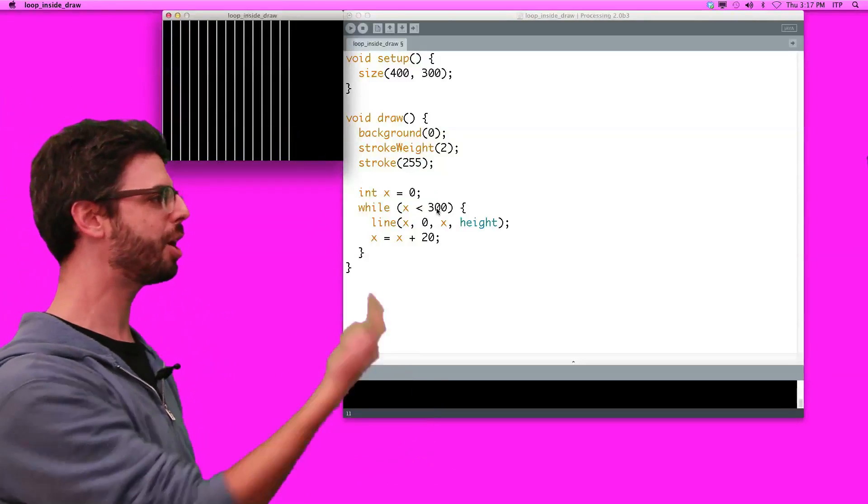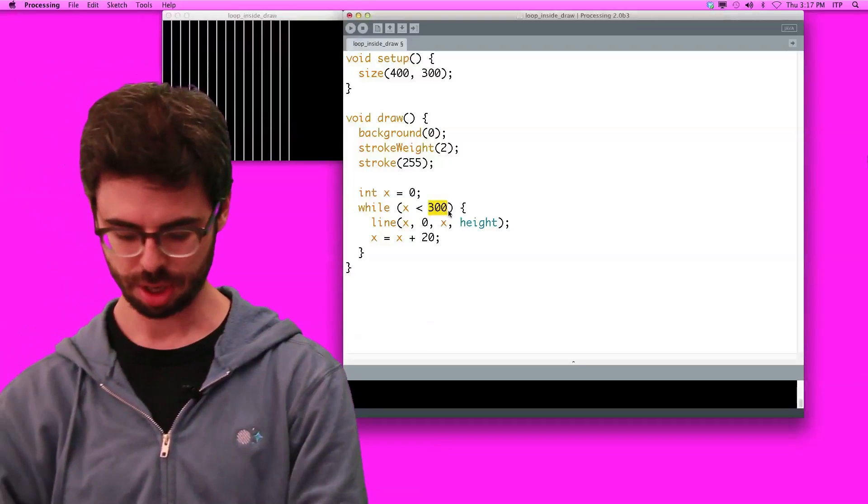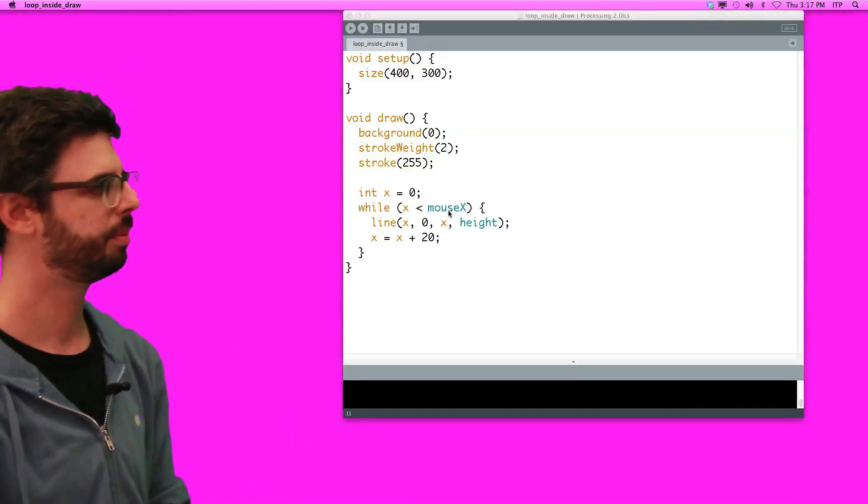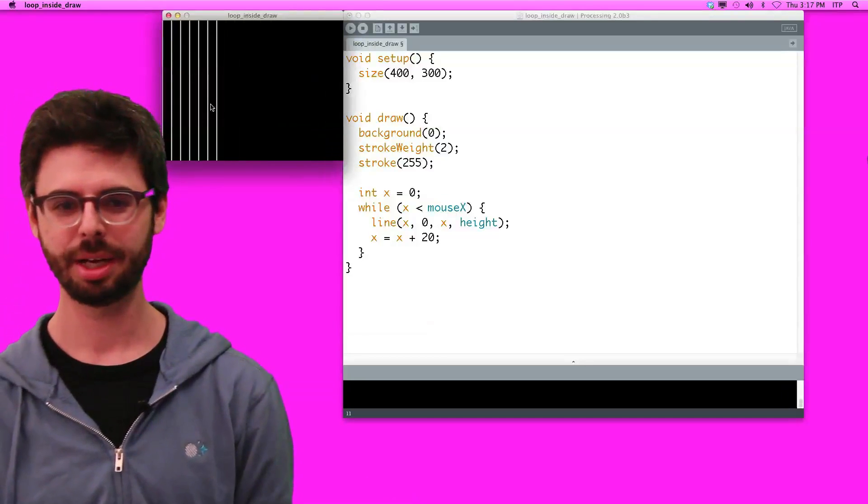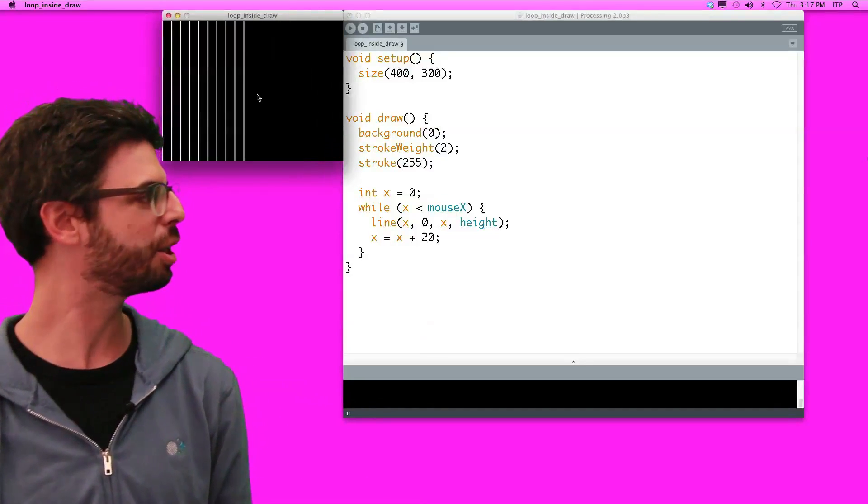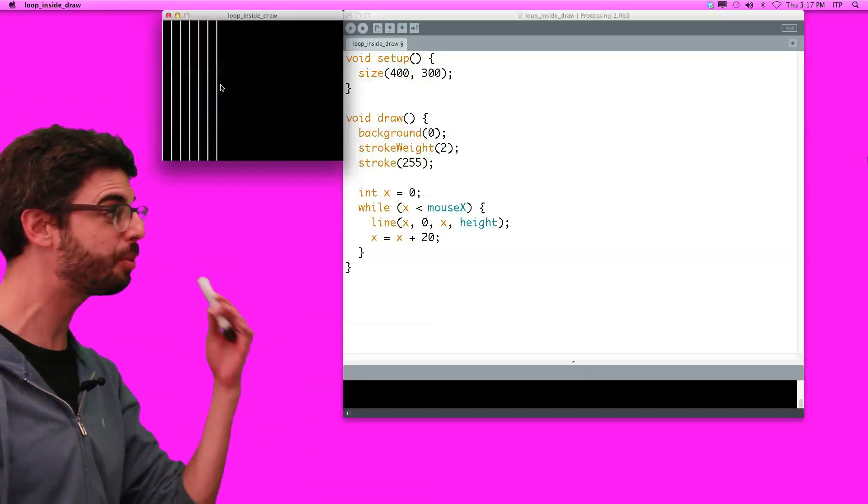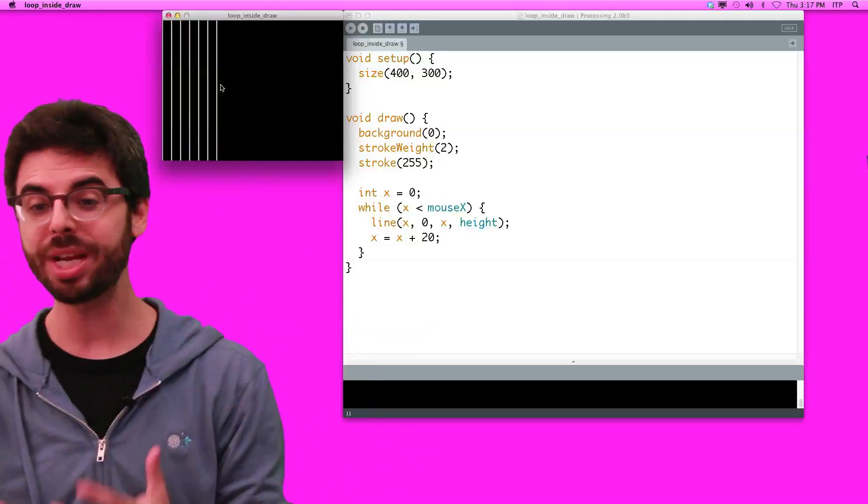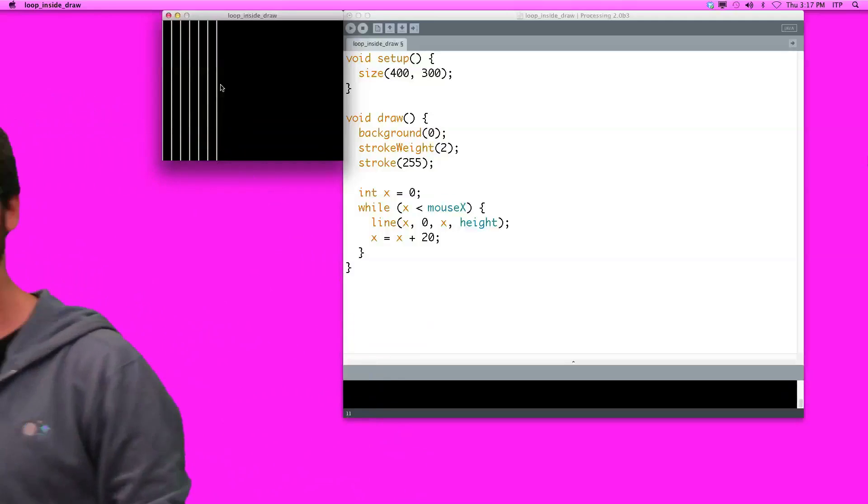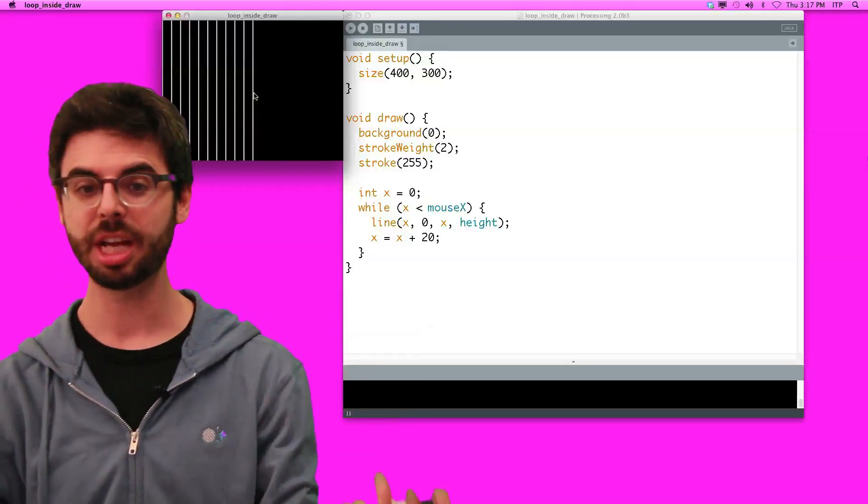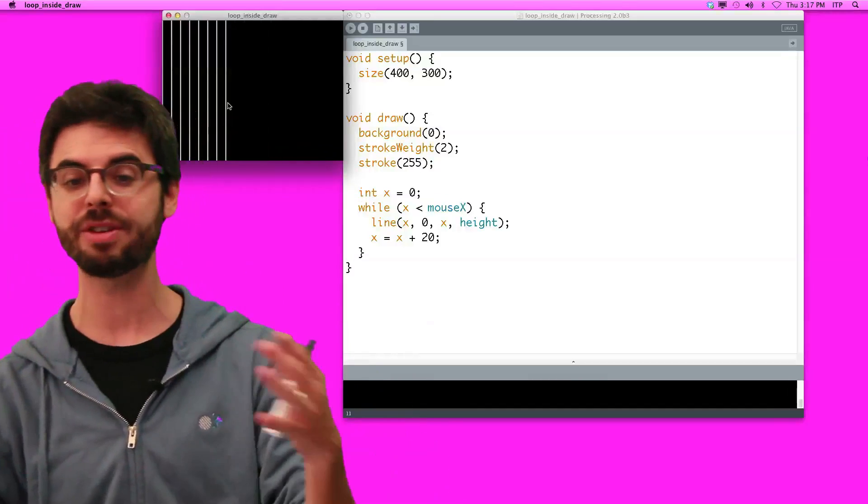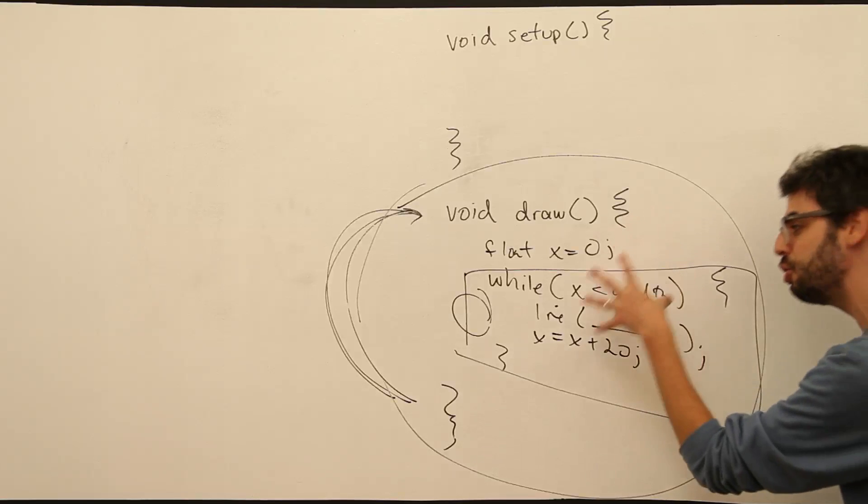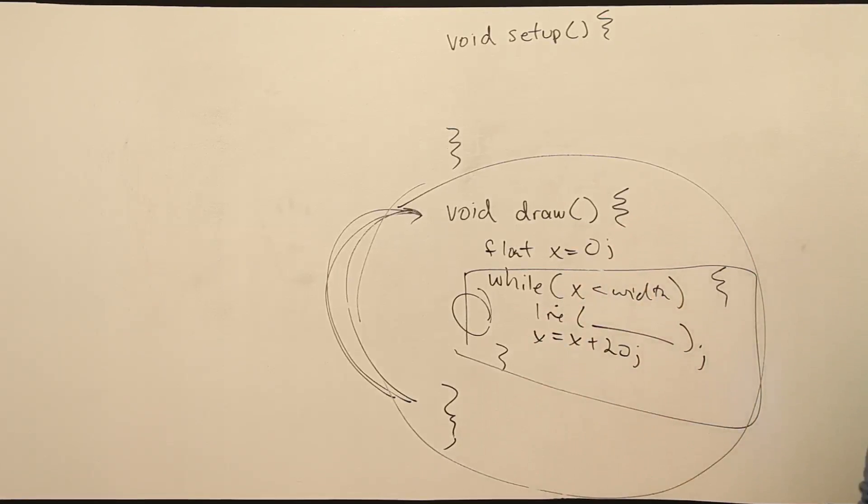For example, what if I said mouse x? Oh, I have to move the mouse. Now I have the number of lines. That loop is, each time through draw, the loop is happening, but it's happening sometimes a few times, sometimes many times. The point is, the outer loop is what's changing it, because it's drawing that loop a certain number of times, a different number of times each time we go through draw. This is not animating. This is doing all at once and showing us the result when we get to the end.